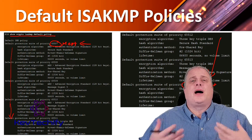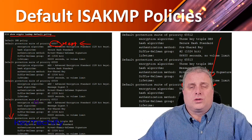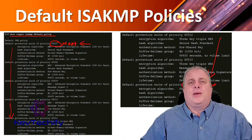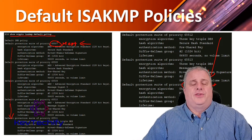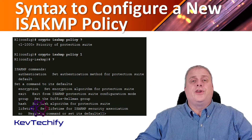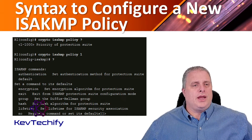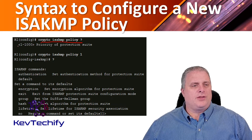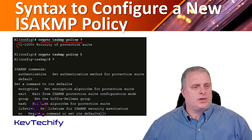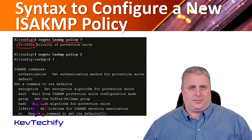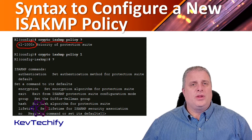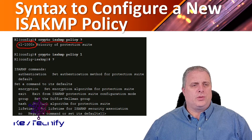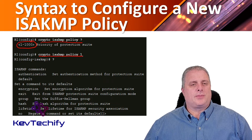None of these default policies match the security policy we're looking to build our VPN for, so a new ISAKMP policy will have to be configured. To configure a new ISAKMP policy, use the command crypto ISAKMP policy. If you put a question mark, it'll give you the range — we can use 1 to 1,000. We're going to create policy one: crypto ISAKMP policy 1.